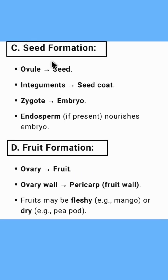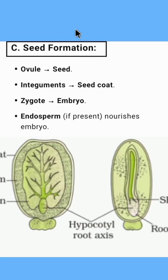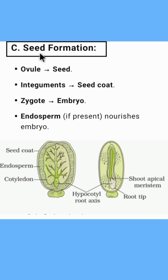After embryo formation, the next process is seed formation. The ovule is converted to a seed. The integuments of the ovule are converted to the seed coat, and the zygote is converted to the embryo. Endosperm, if present, nourishes the embryo.